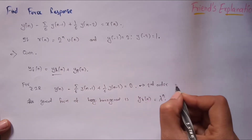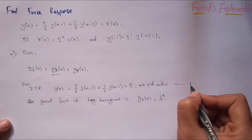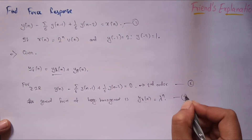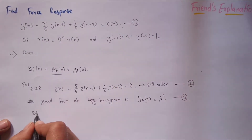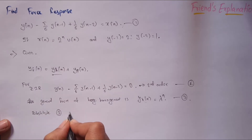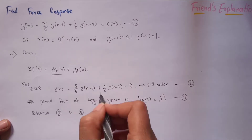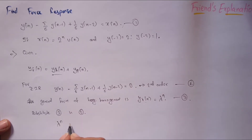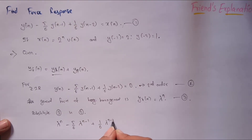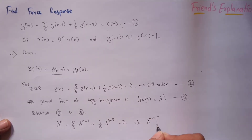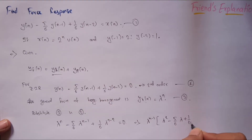We substitute y_h of n = lambda^n into the homogeneous equation. After substitution we get: lambda^n minus (5/6) lambda^(n-1) plus (1/6) lambda^(n-2) equals zero. Taking lambda^(n-2) as common, we get lambda squared minus (5/6) lambda plus (1/6) equals zero. We call this equation zero.